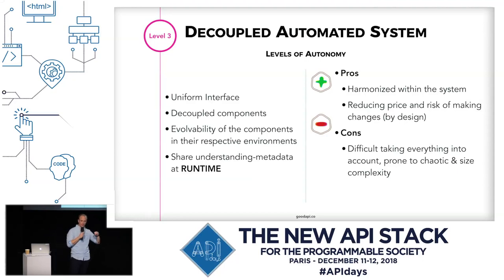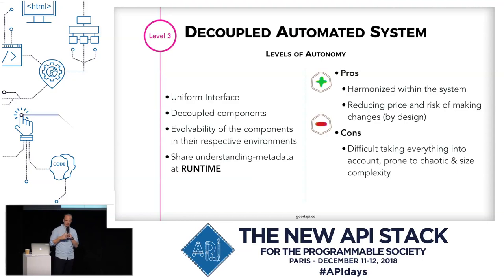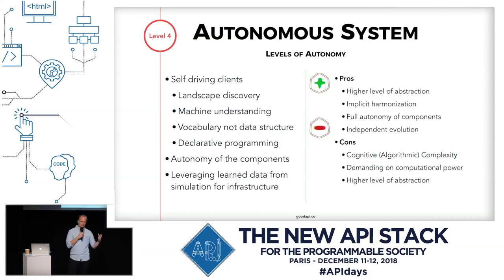The decoupled automated system includes a uniform interface — the abstraction that enables different clients to use APIs — and discovery at runtime. Finally, level four: the fully autonomous system, where you have self-driving clients that can discover services in the landscape, understand what the services are doing, navigate through that service landscape, and achieve goals at runtime.